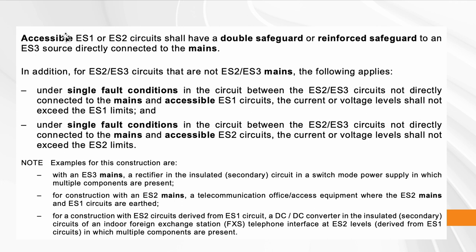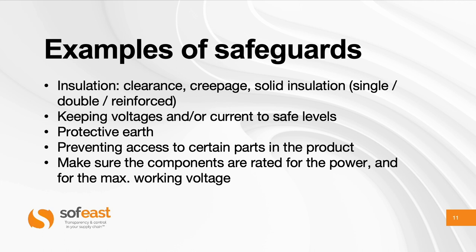This goes into a lot more detail — this is just a snapshot. For accessible circuits, meaning parts that don't require a special tool to access, you need a double or reinforced safeguard for an ES3 source directly connected to mains. You really need very serious safeguards that cover what happens under single fault conditions in different cases.